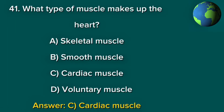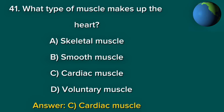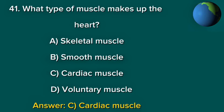Question 41. What type of muscle makes up the heart? A. Skeletal muscle. B. Smooth muscle. C. Cardiac muscle. D. Voluntary muscle. Answer: C. Cardiac muscle.